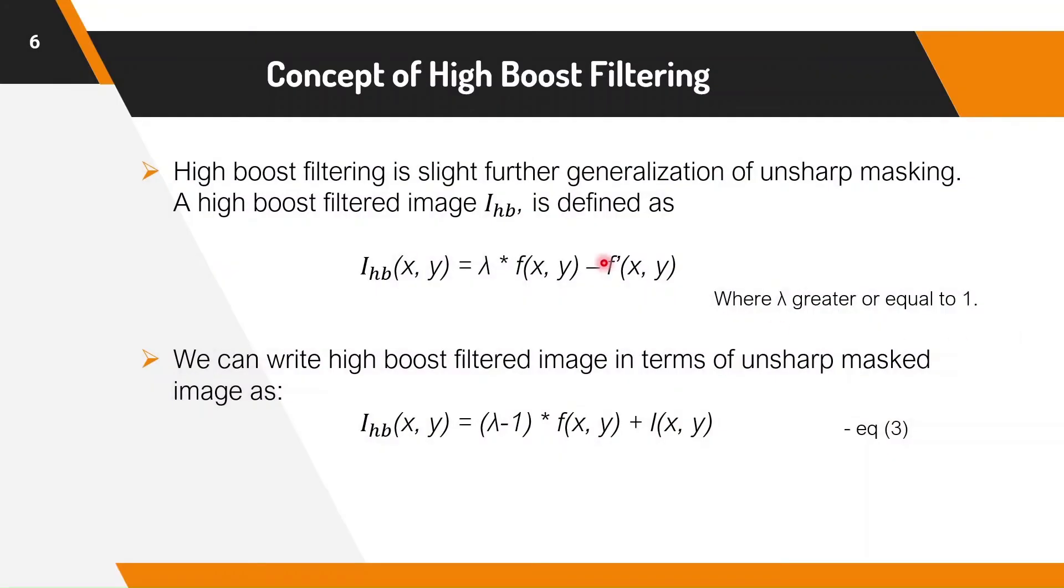High boost filtering is a slight further generalization of unsharp masking. A high boost filtered image is defined as i_hb of (x, y) equals lambda times f(x, y) minus f'(x, y), where lambda is greater than or equal to 1.